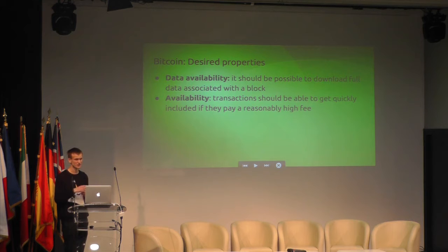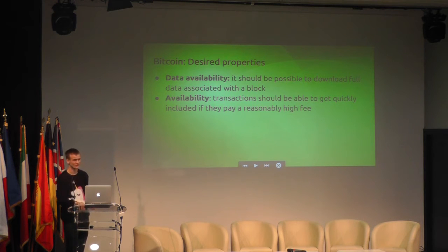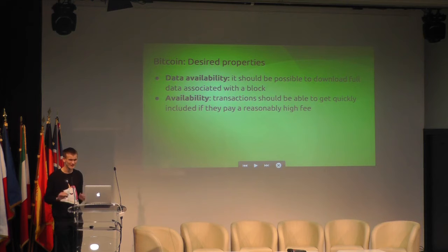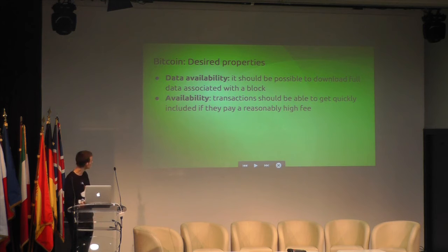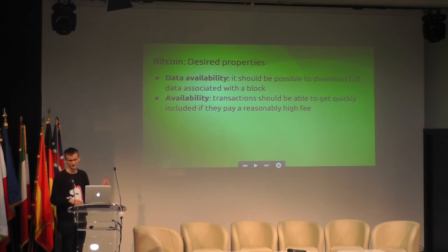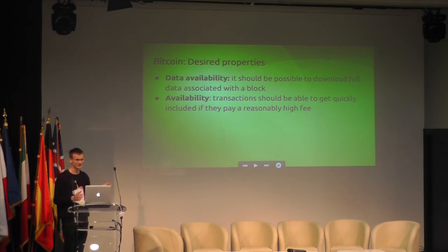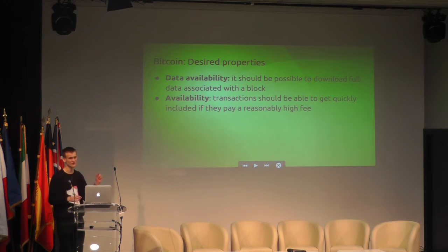Availability basically states that if you send a transaction, it should be able to get quickly included if it pays a sufficiently high fee. The point is that if someone really wants to get a transaction included, the system should not discriminate against them. This gets very important if people start heavily using second layer architectures. If you think about something like a channel-based system — the Lightning Network, Raiden — any violation of availability in this sense, a censorship attack, can be fairly directly translated into a theft attack on the channel system.